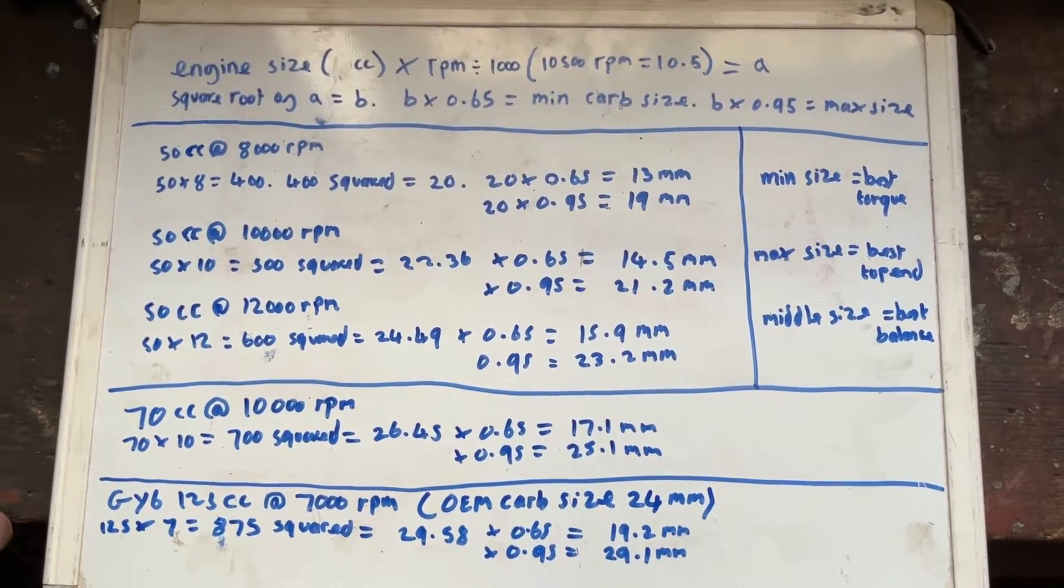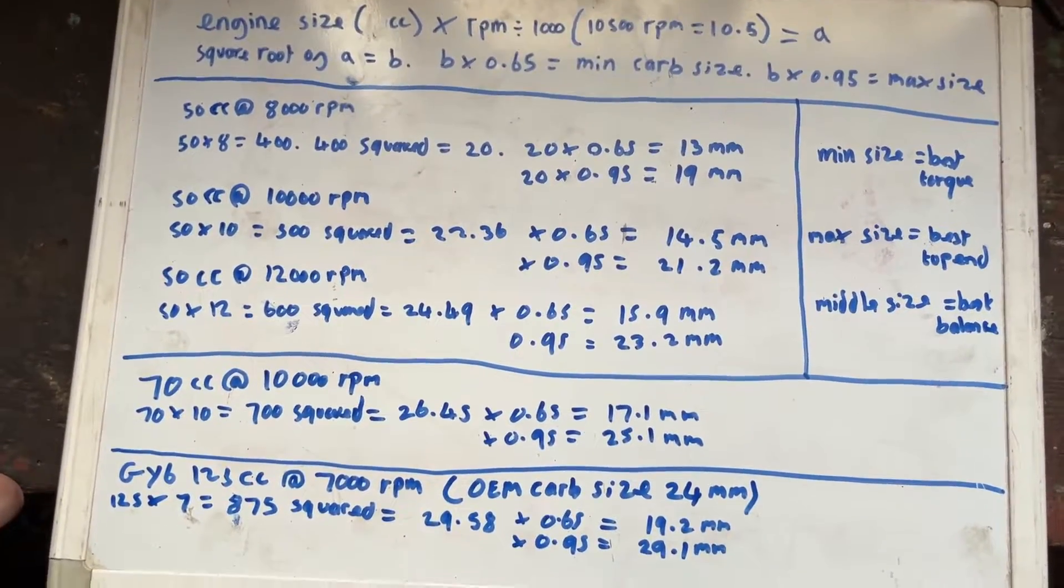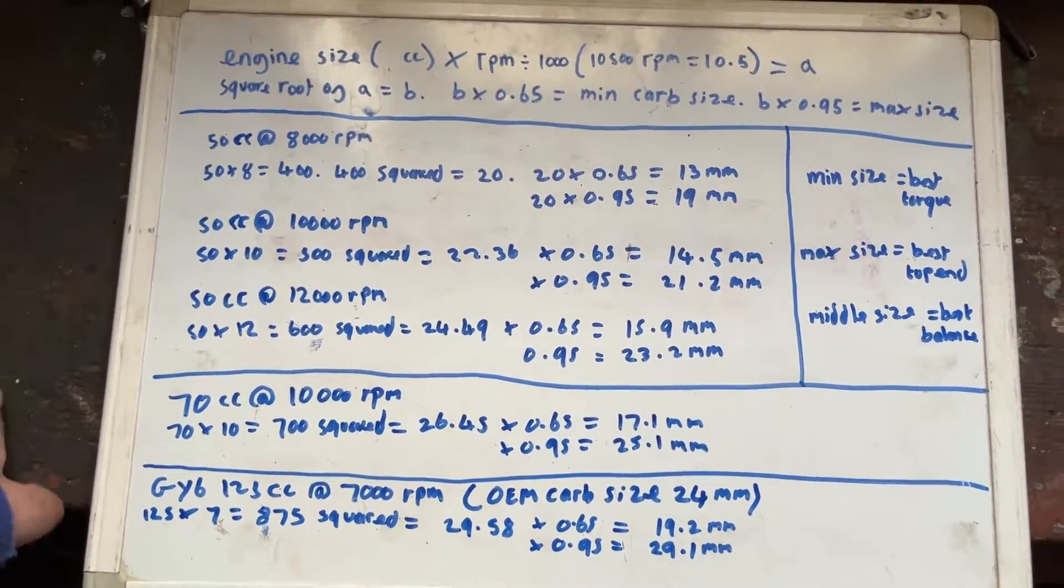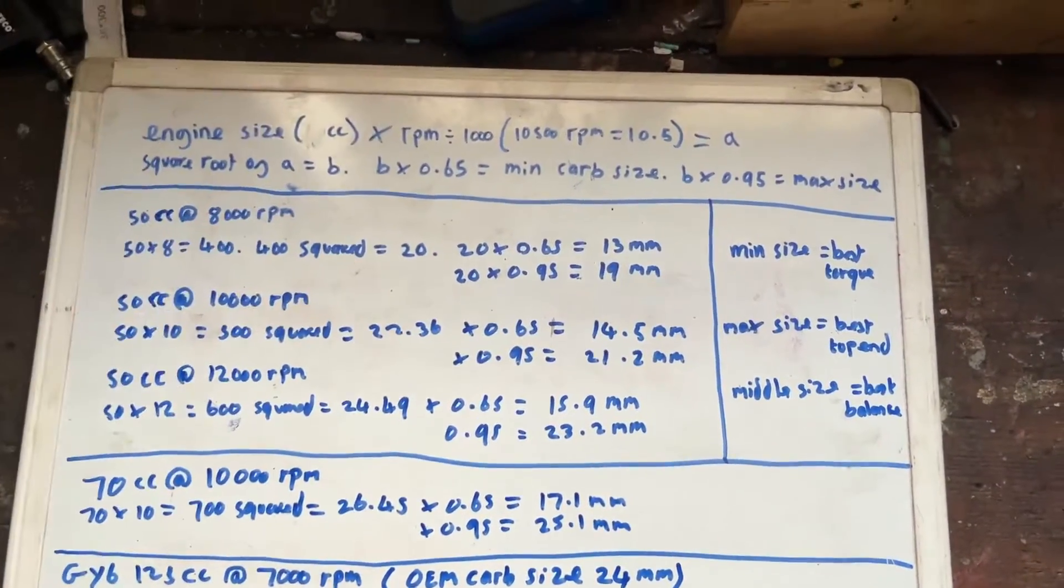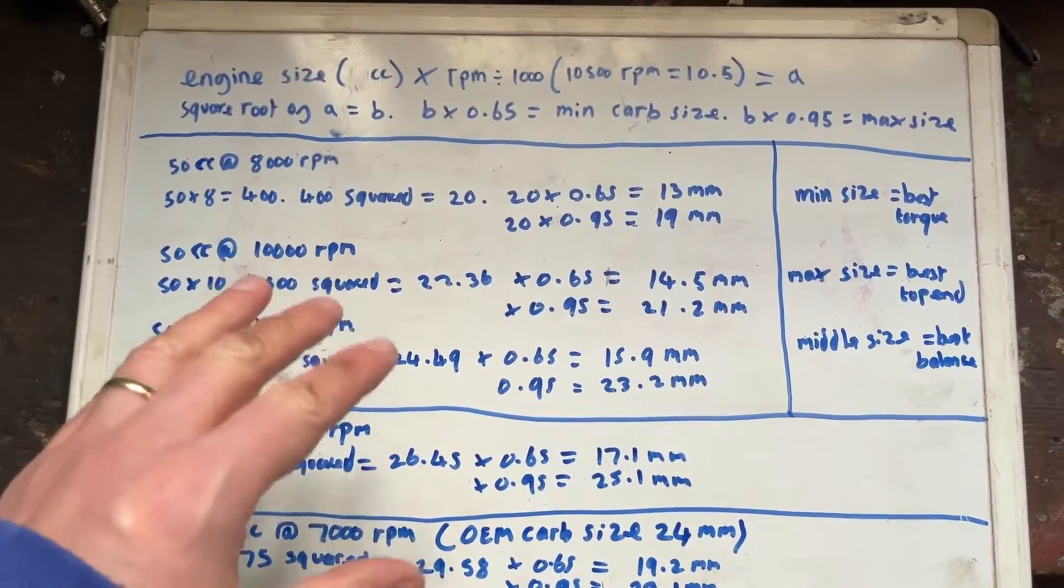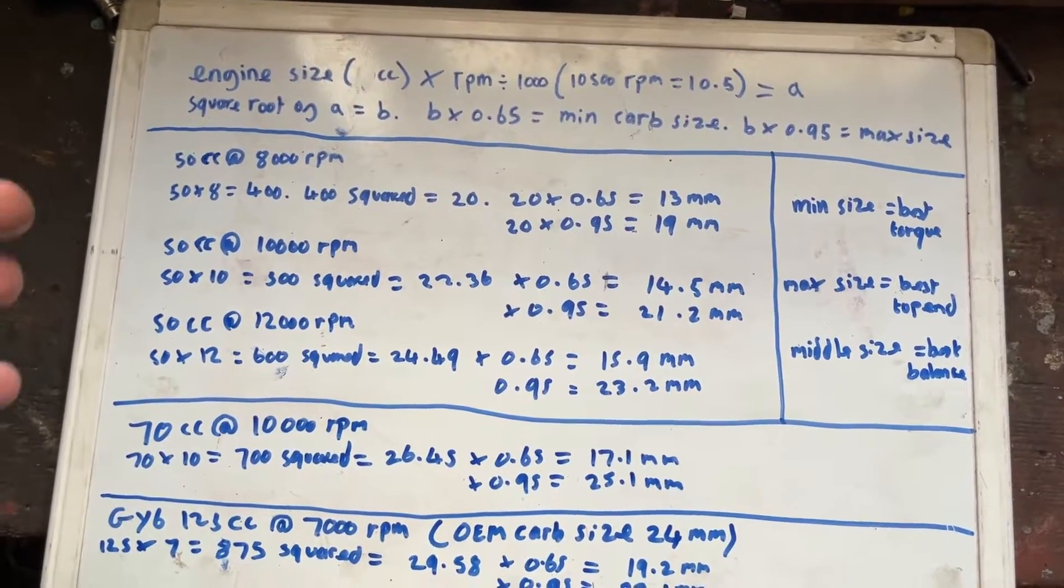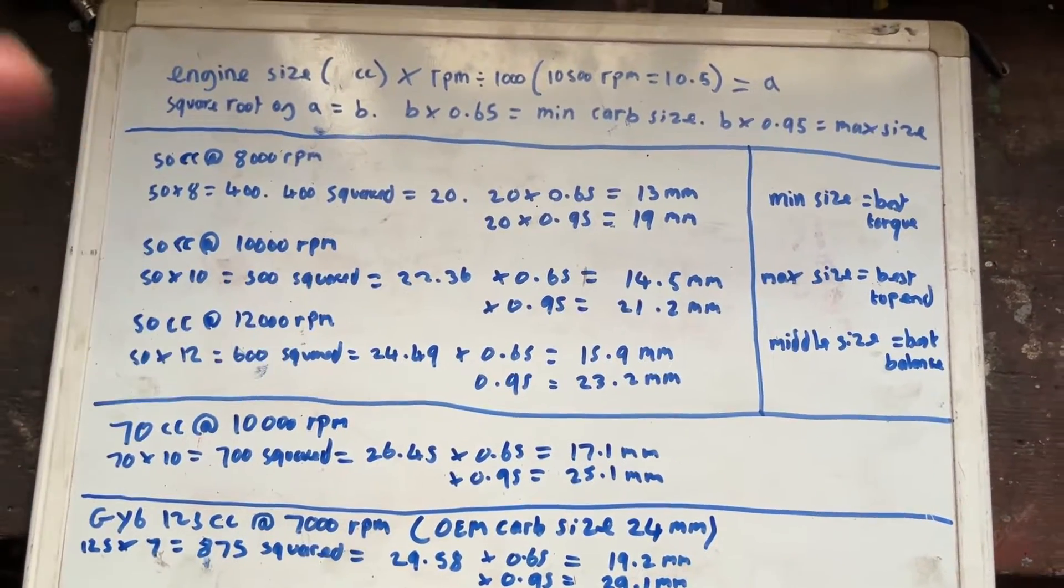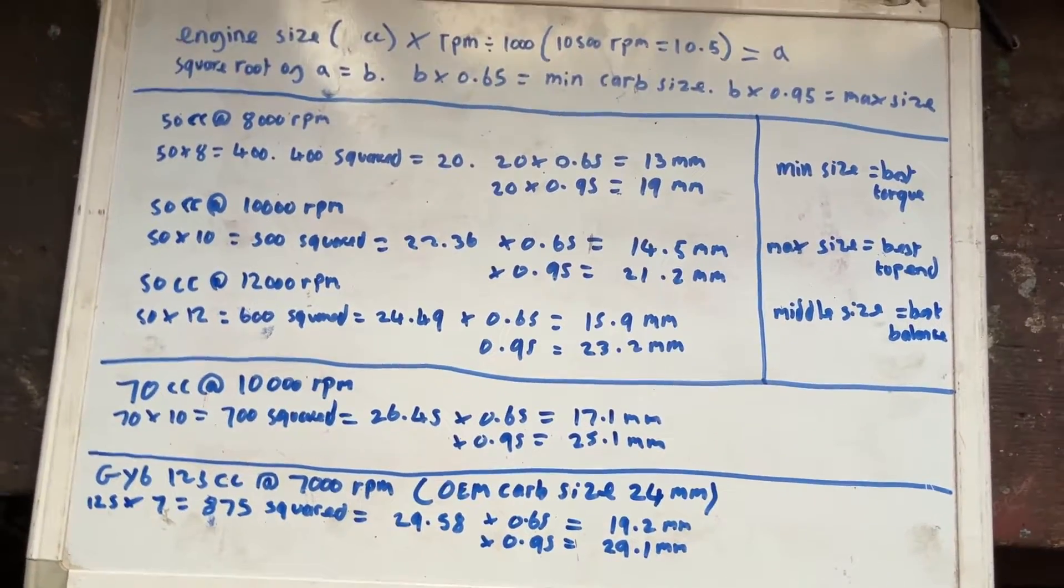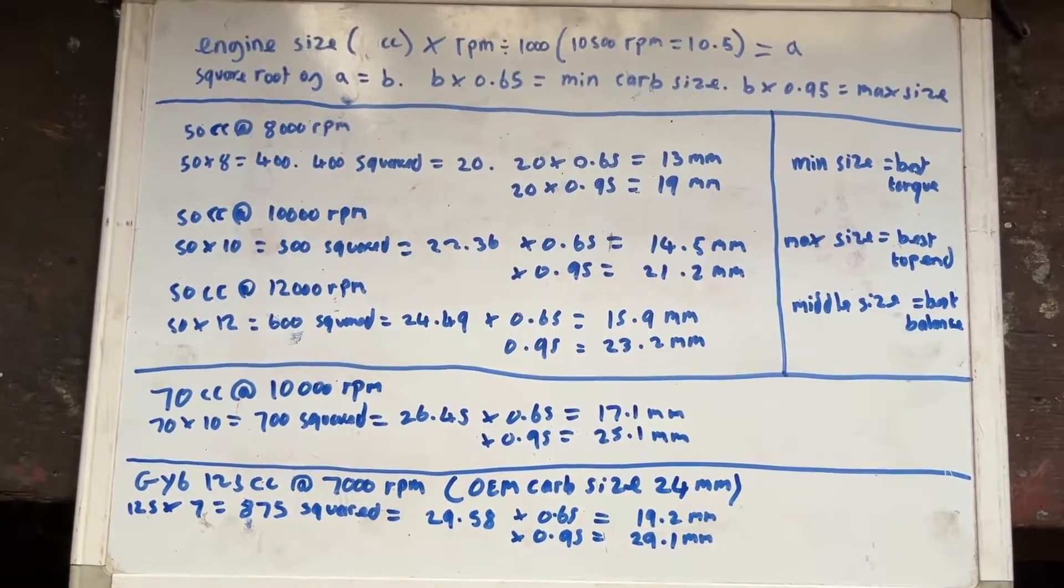You're still going to have to obviously go through all the faff of getting the jetting right and stuff like that. But at least you don't have to go out and buy different carburetors and try them to see which one's actually going to work. You can use this calculation to work out exactly what size carburetor is going to fit you best, and then you can tune that carburetor to perform as good as it can.